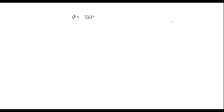That is, I can write V is equal to voltage across resistor, which is i(t) into R, plus voltage across inductor, which is L·di(t)/dt. We need to get the expression for i(t), so now I will simplify this using Laplace transform.